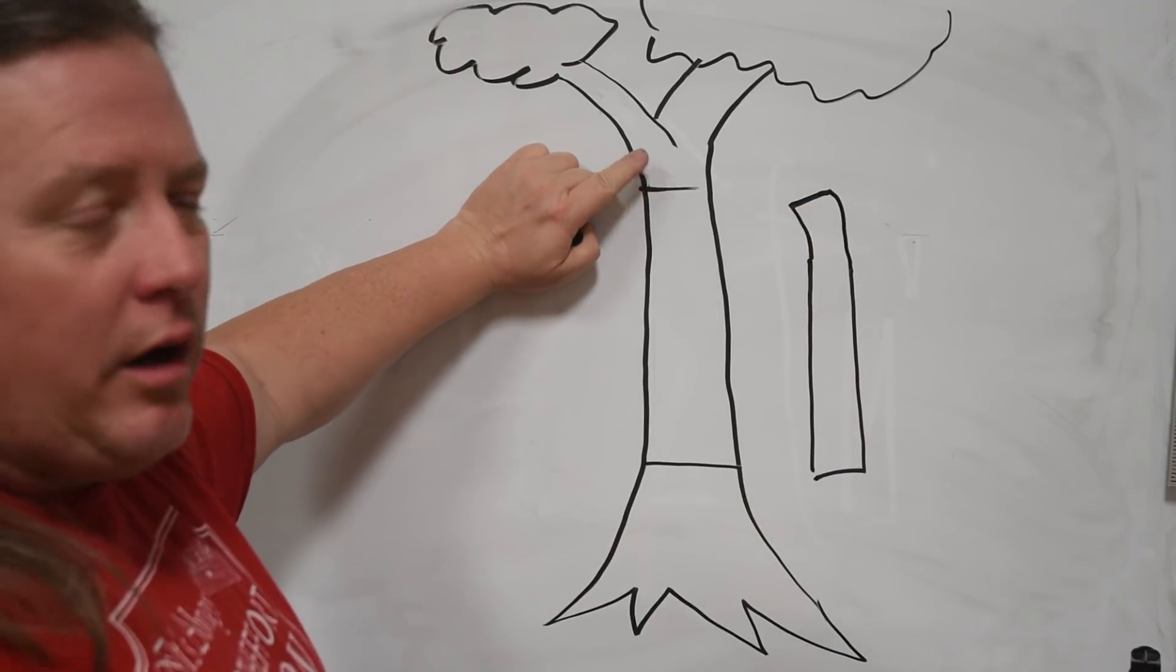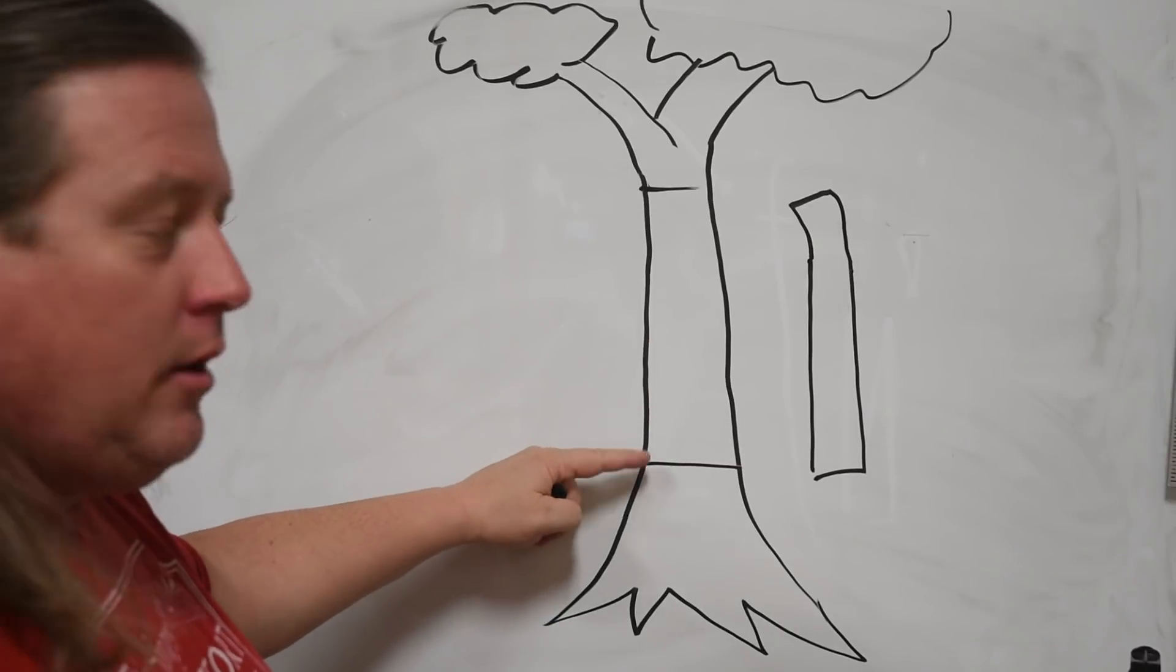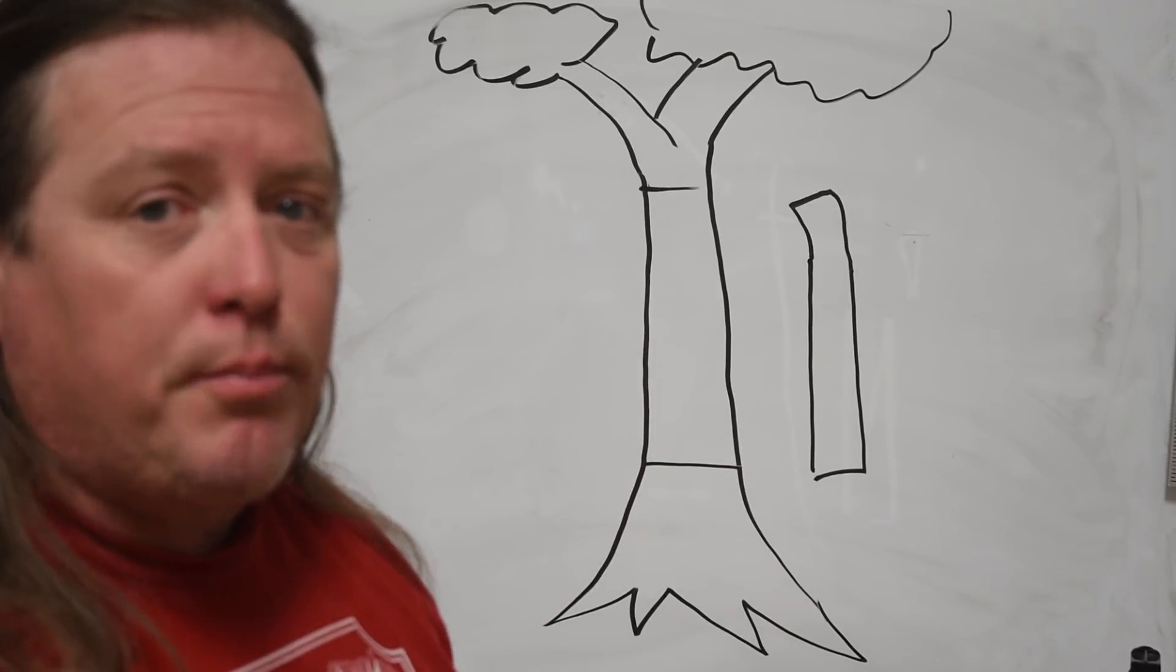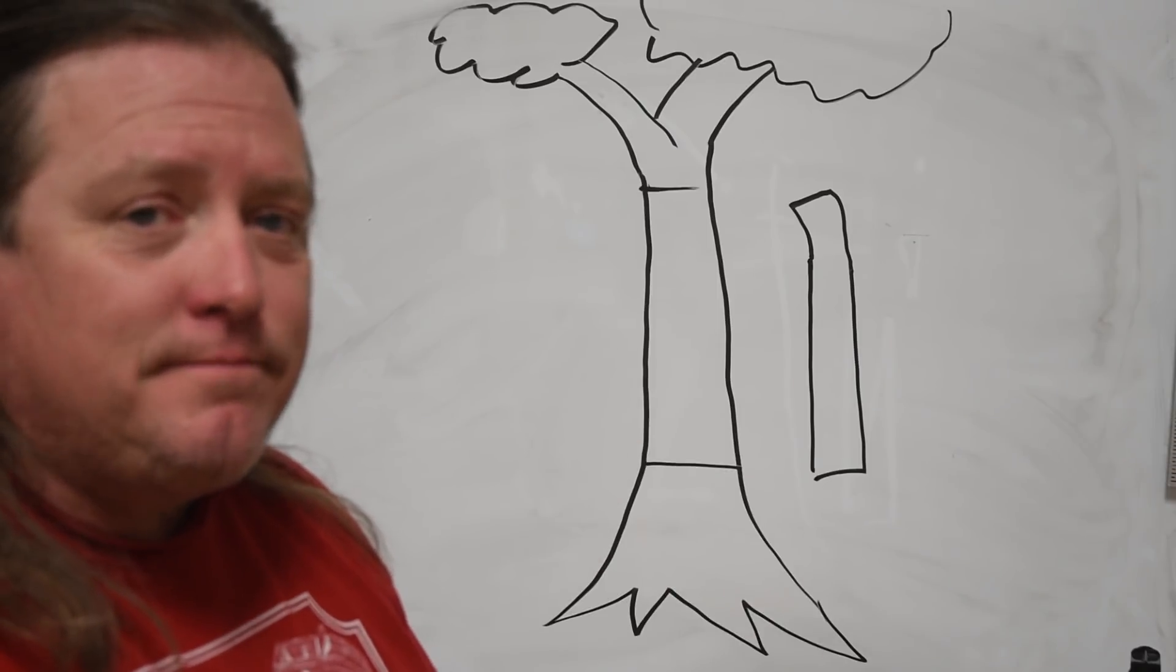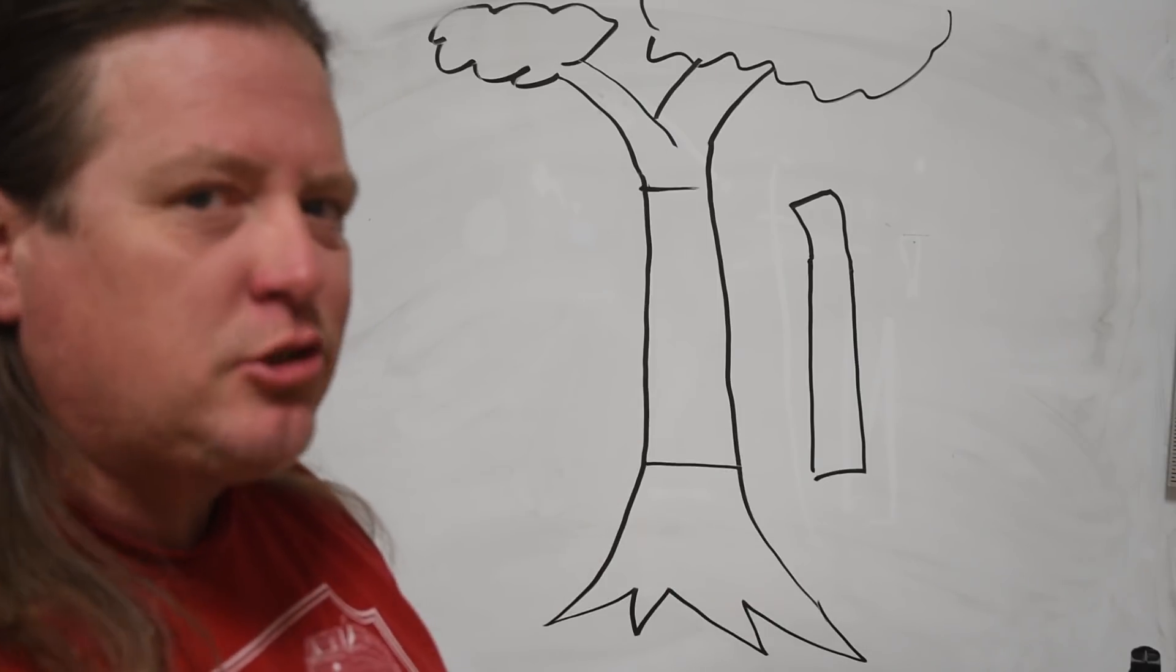And that's why sometimes you can go to a lumber mill and if you look at a board, it will be dead straight and then at the very end it will kind of tweak off one way or the other. Well, as you can see, where did that come from a tree? Maybe they got a little bit too close to the branch or the root ball when they were cutting that board out, trying to get just that little bit of extra wood.